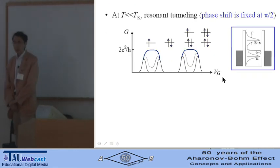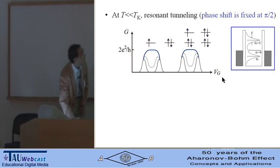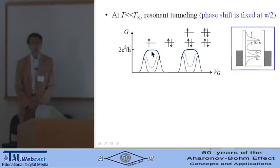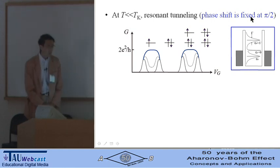As a result, at low temperatures much lower than Tk, resonant tunneling takes place through the Kondo resonance. So the conductance goes to 2e² over h. In other words, a phase shift accompanied by the transport is fixed at half of π.